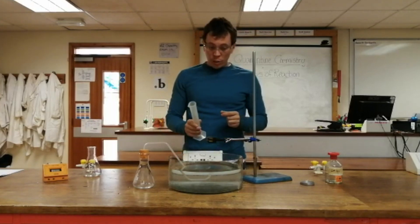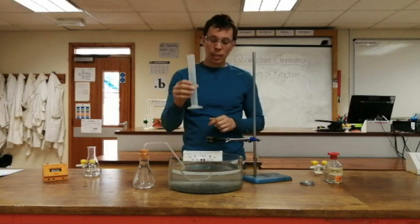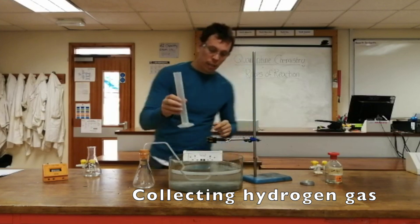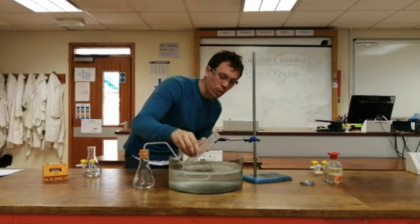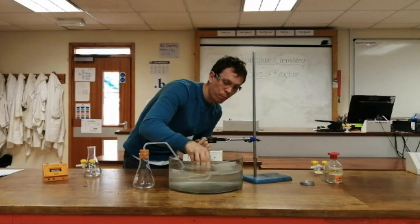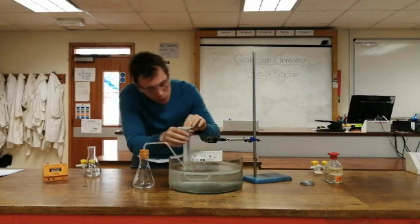The experiment that we're going to do today is similar, only instead of counting the bubbles we're going to collect the bubbles in an upside down measuring cylinder that's been filled with water. This is called downwards displacement of water because the water gets forced downwards and out of the measuring cylinder. I put the measuring cylinder in like this and it fills with water. You need to make sure it's completely filled so there's no air bubble up there at all.